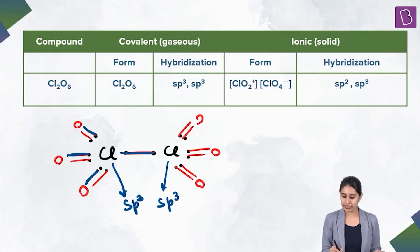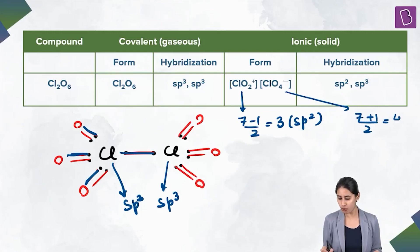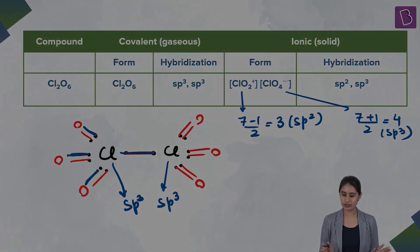But when we talk about the ionic state, it exists as ClO2+, that means 7 minus 1 by 2, 6 by 2 is 3, SP2 hybridized. ClO4- is 7 plus 1 by 2, 8 by 2 is 4, SP3 hybridized. ClO2+ positively charged and ClO4- negatively charged species.